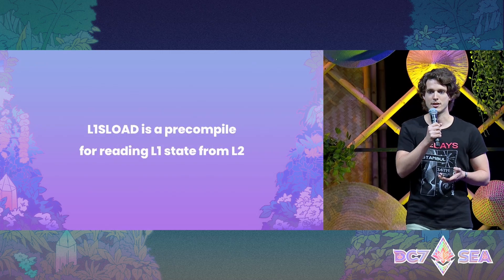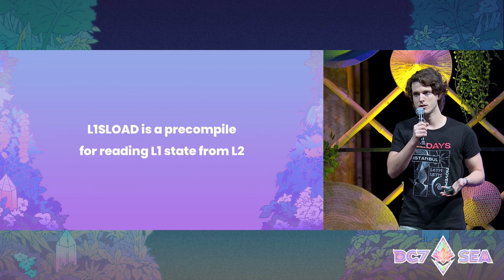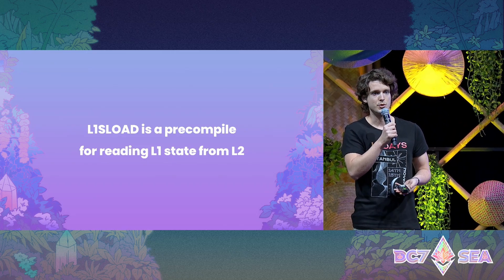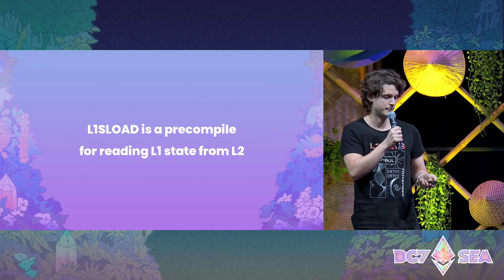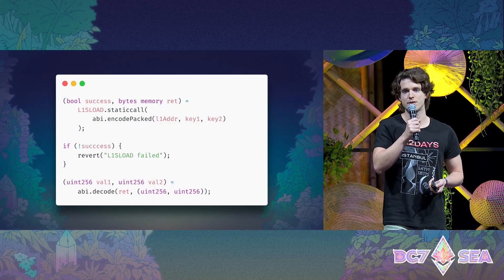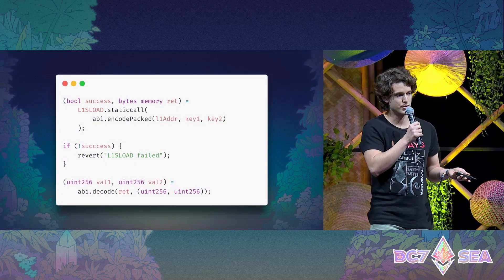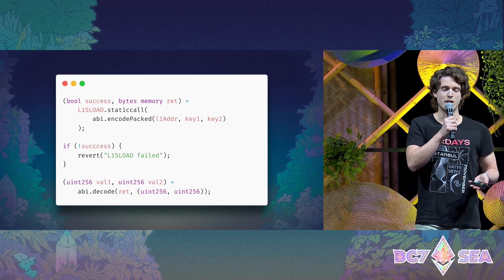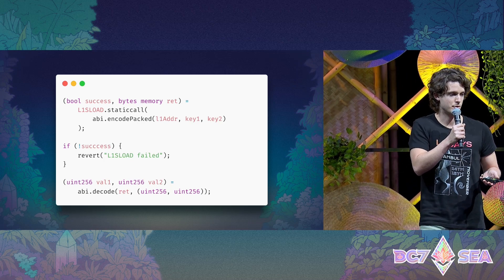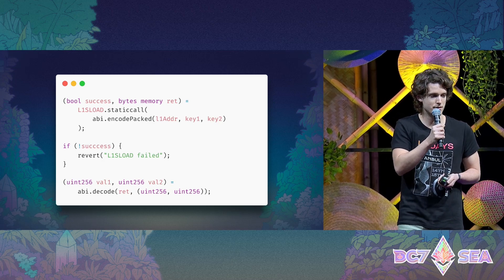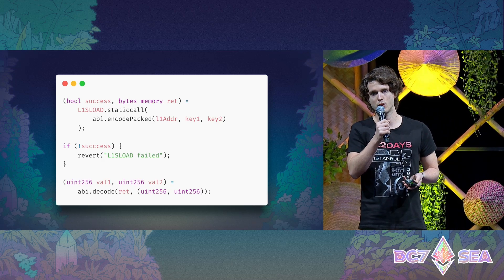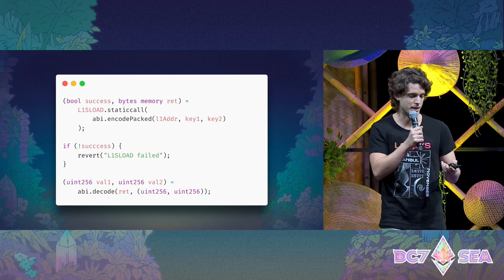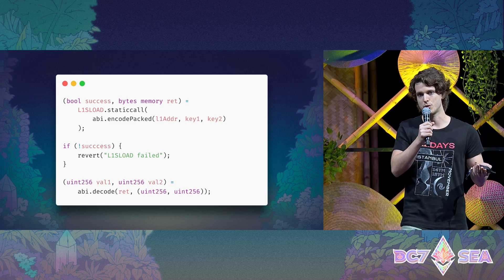L1SLOAD is a precompile deployed on L2s like Scroll and other L2s that you as a developer who deploys your dapp on L2 can use to read state directly from L1. If there are any Solidity devs here, this is how it looks. This is the contract you would deploy on L2 — it's very simple. You take the L1 contract address, provide one, two, or up to five storage keys, encode it, then call this precompile, and at the end you get the result back that you can decode and use in your application logic.